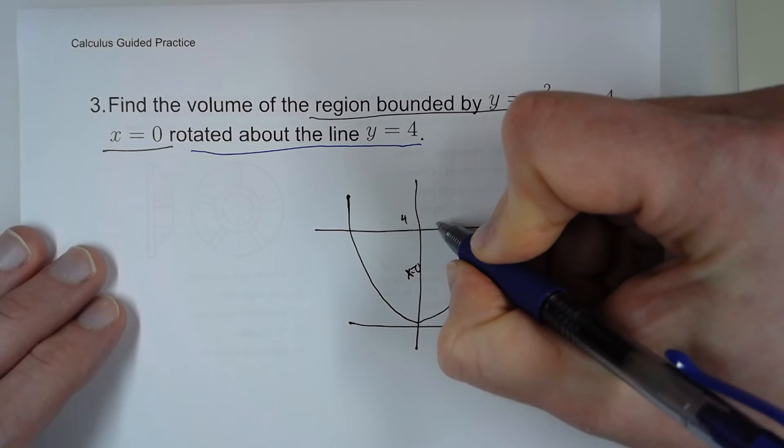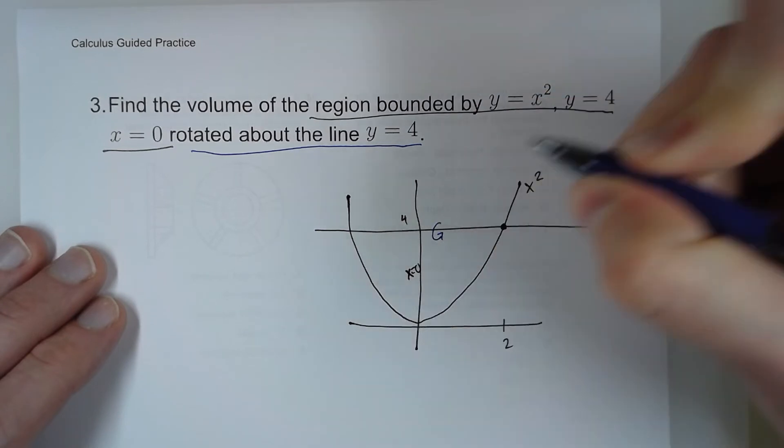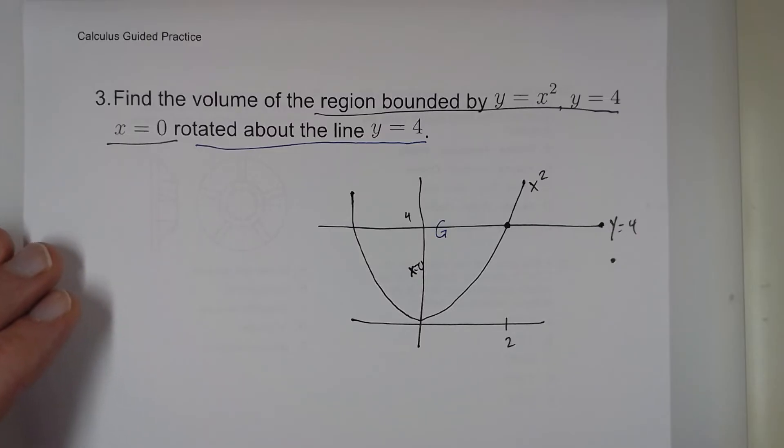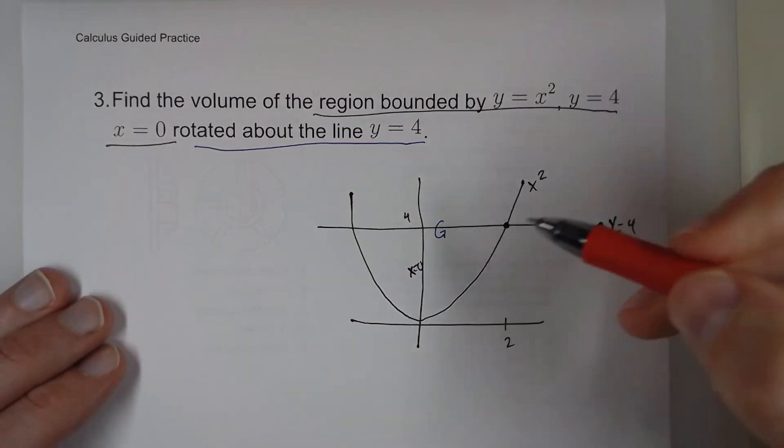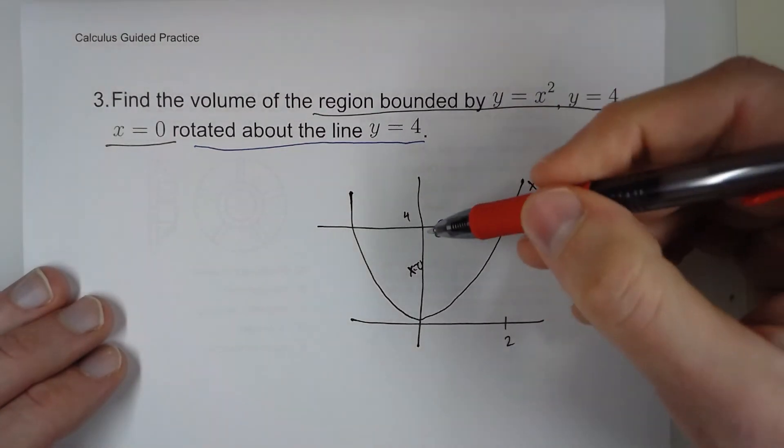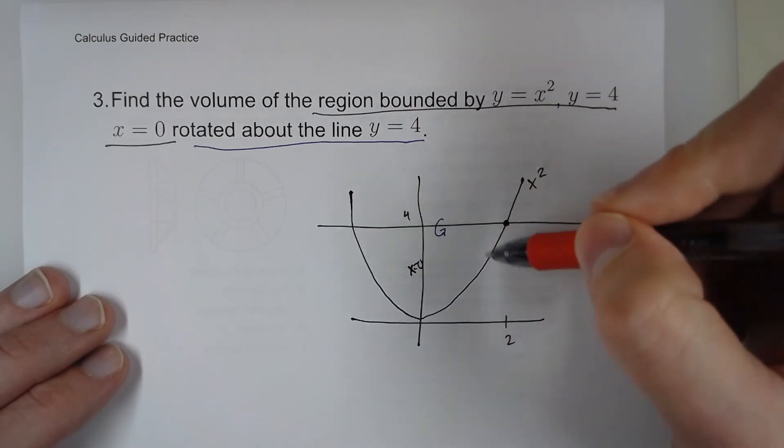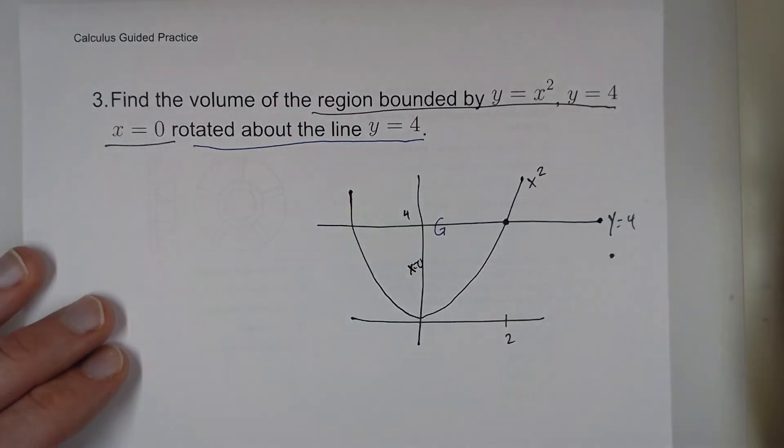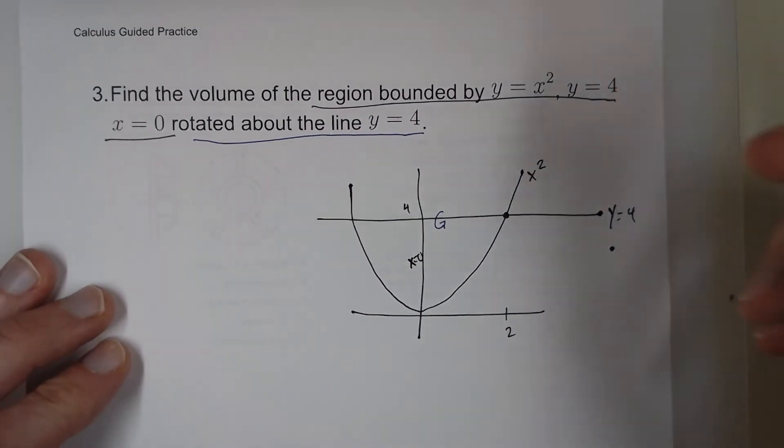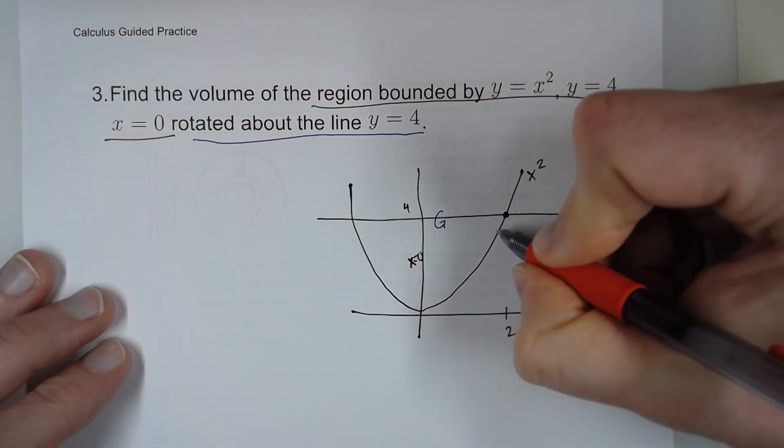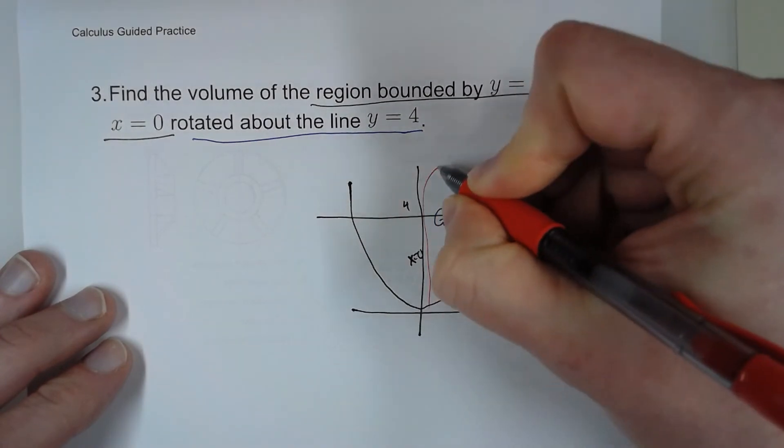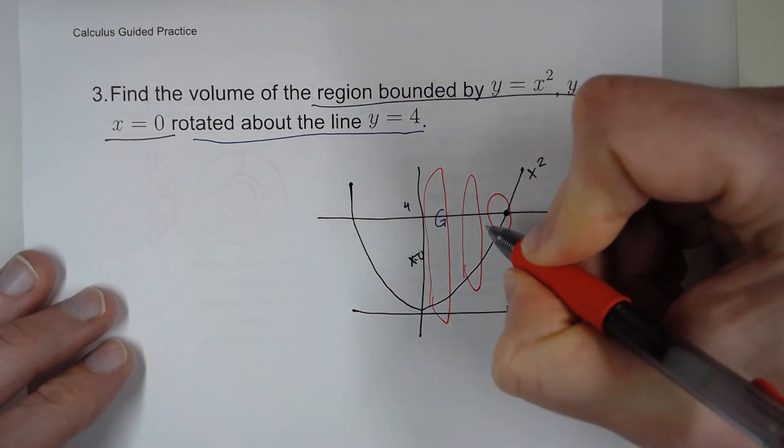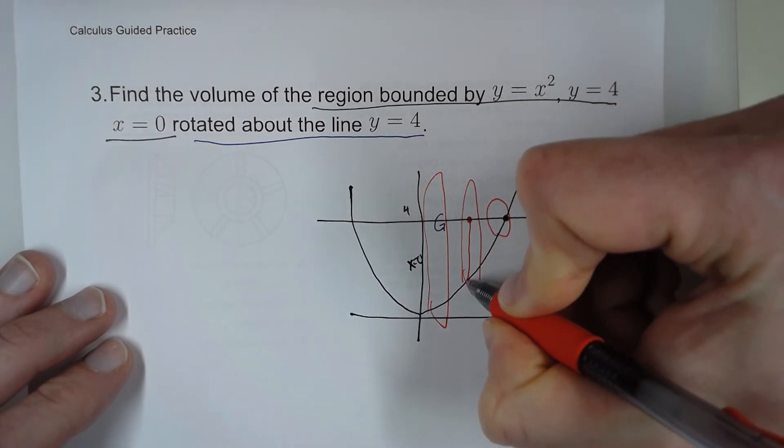And here, it's being rotated around this line. A lot of people get the wrong idea that when you do disk method, it can only be rotated around the x or the y-axis. That's not true. You can rotate it around anything as long as whatever you're rotating around borders the region. So what we have here, circle like that, circle like that, circle like that. So this is our radius.